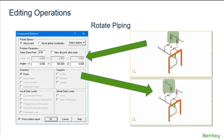AutoPipe supports the ability to rotate certain features in a model relative to the global axis. A selected range of components can be rotated about a specific angle using the edit rotate command. When this command is selected, AutoPipe prompts for the base point on the selection set — the default is the first point of the selection set.